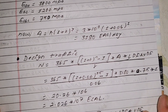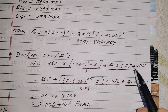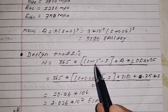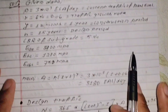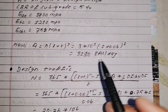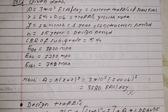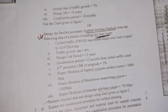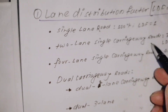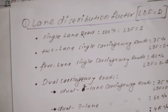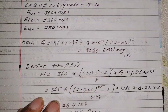Now the design traffic formula: 365 × [(1 + r)^n − 1] / r × A × lane distribution factor × vehicle distribution factor. Here r = 0.06, n = 15 years (design period), A = 3180. The question mentions an existing two-lane road, so the lane distribution factor for a two-lane single carriageway road is 0.75.